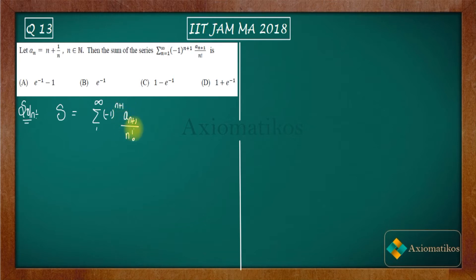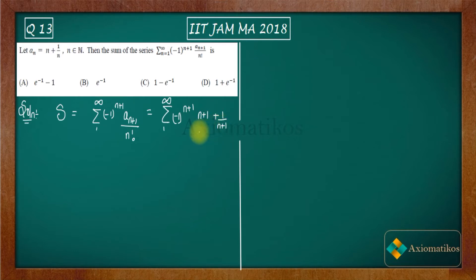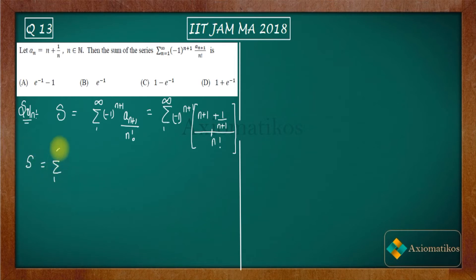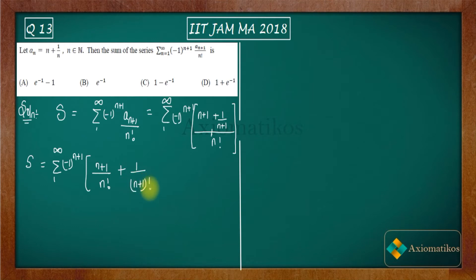Now, A_(n+1) can be written using this formula. So what you will get is (-1)^(n+1) times (n+1+1)/(n+1), summed to infinity. I am using this identity to write your series properly. Now the first step is to break the LCM. So you will get summation from 1 to infinity of (-1)^(n+1) times [(n+1)/n factorial plus 1/(n+1) factorial]. Note that (n+1) times n factorial is actually (n+1) factorial. So this is the basic mathematics.